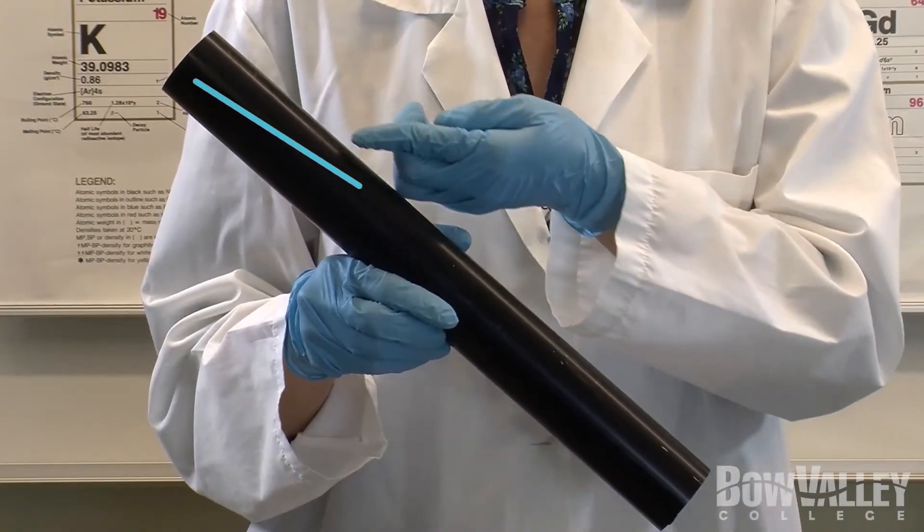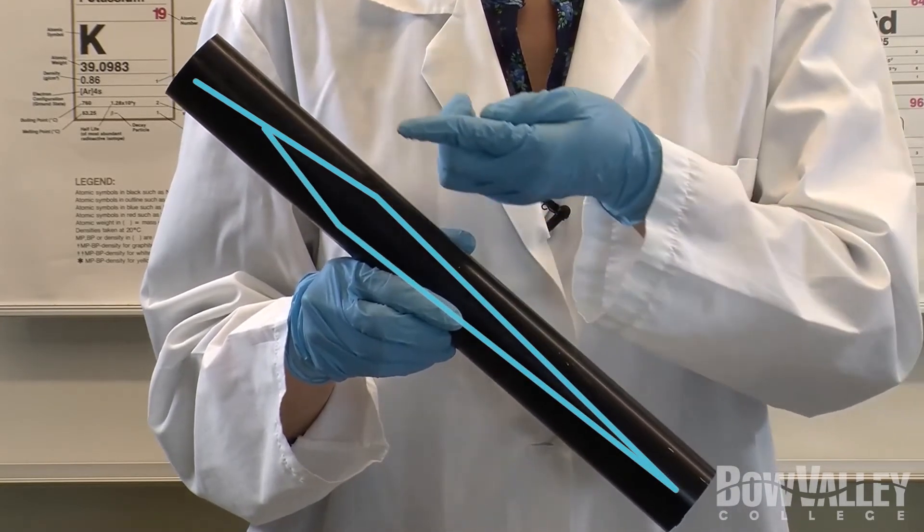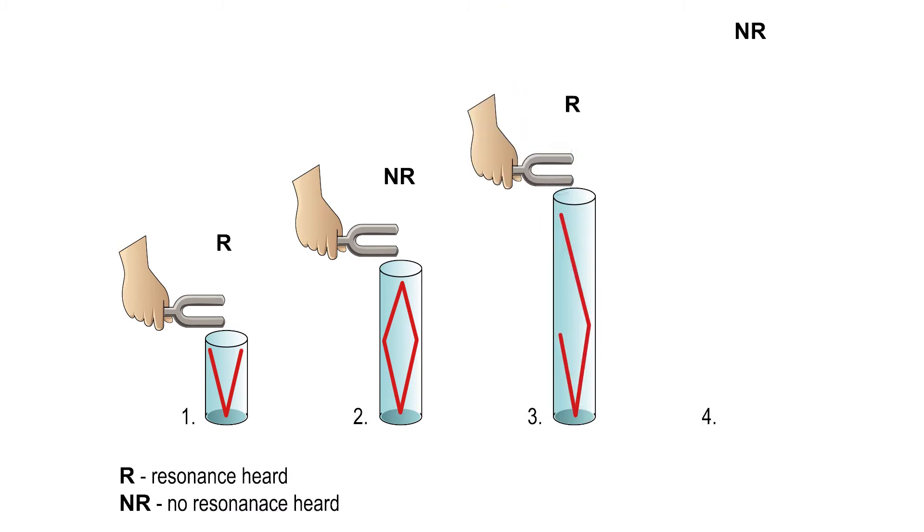As sound waves travel down the length of pipe and hit a barrier, they reflect back towards the source. The incident and reflective waves interact and form an interference pattern inside the pipe. The interference pattern creates a standing wave that can be used to determine the wavelength of the sound.